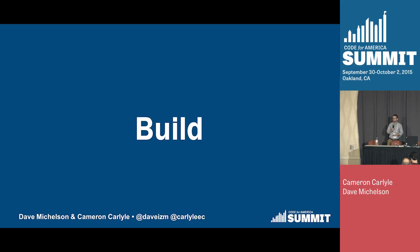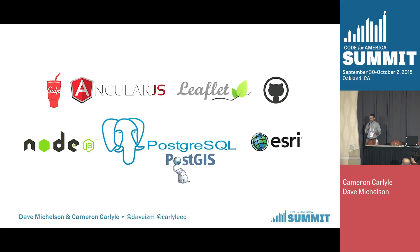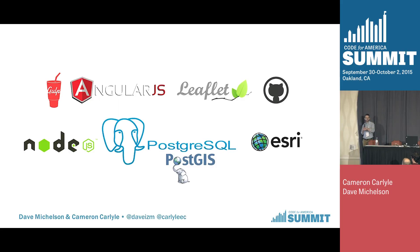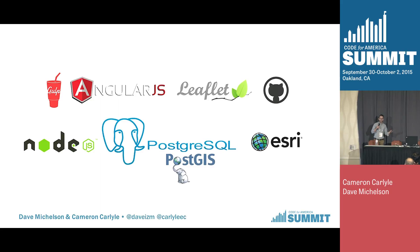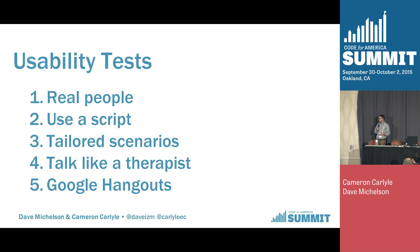Once we had the MVP, it was time to actually build the software. We used what we knew and what we had. I'd done a lot of Angular.js at my previous job, so that was a natural fit. Dave is great at PostgreSQL and PostGIS. We had an Enterprise License Agreement with Esri at the city, so rather than spend three to six months writing a REST API from scratch, we used Esri's REST API that comes out of the box — it didn't cost us anything extra because of our existing ELA. That was our technology stack.